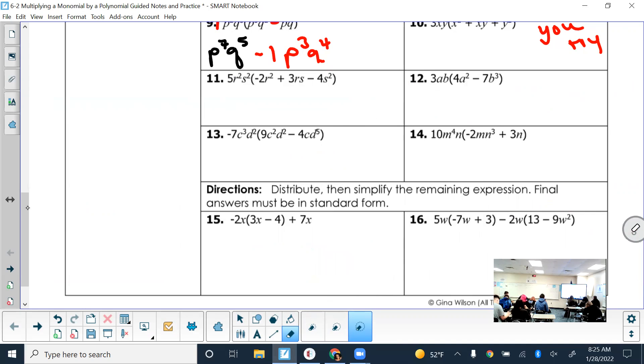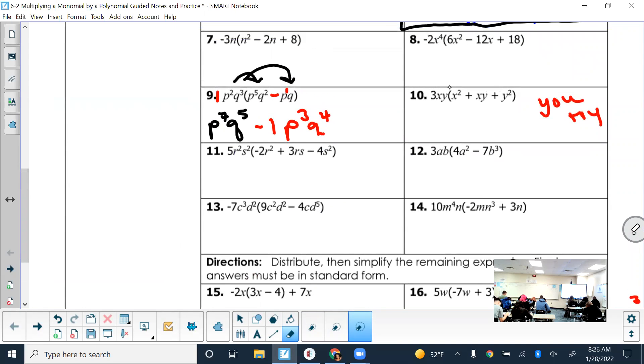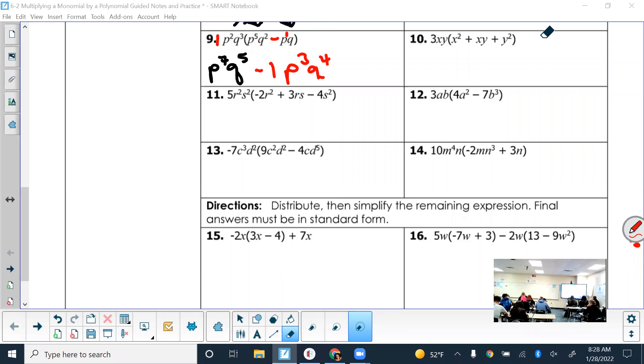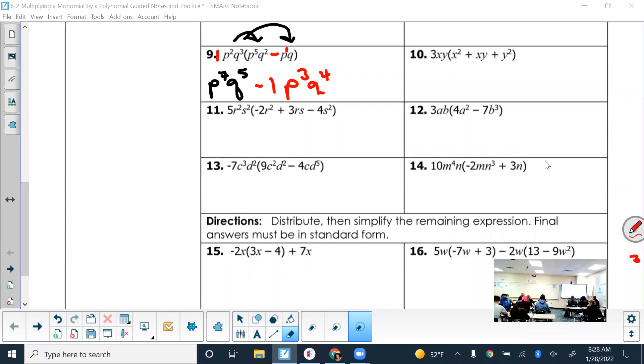Go ahead and try number 10. Even if you weren't here yesterday, just do your best. Remember to distribute the outside term to all the terms inside. We'll go over it in about one minute. Let's see how far you got. So what is the first step when you multiply a monomial times a polynomial? Distribute.